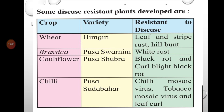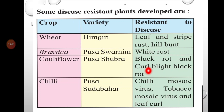In wheat, the variety Heemgiri is resistant to leaf and stripe rust and hill bunt diseases. This table is very important for exams — one or two questions always come from it. Brassica variety Pusa Swarnim is resistant to white rust. Cauliflower variety Pusa Shubra is resistant to black rot and curl blight.